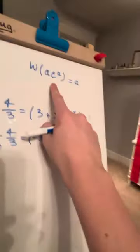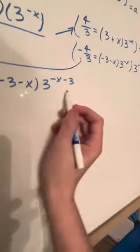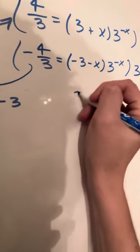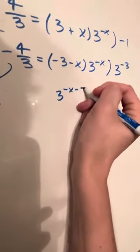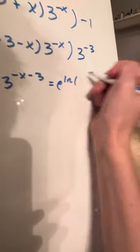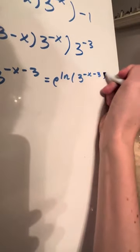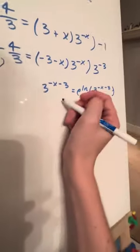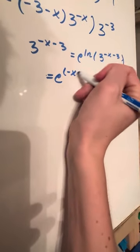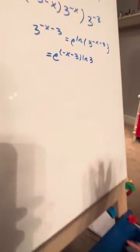Is that the W form? Sort of — it doesn't have a base e. So we need to convert that to base e. We need to say that 3 to the power of (negative x minus 3) is equal to e to the power of ln of 3 to the power of (negative x minus 3), which is e to the power of (negative x minus 3) times ln 3. That's just our log rules.